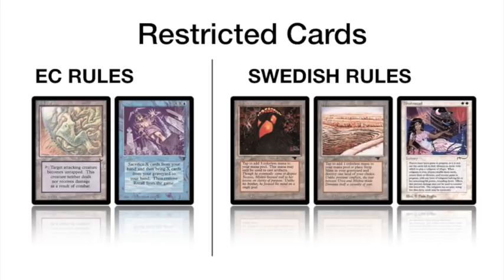So far the answer is no, which to me is evidence that it was okay to unrestrict Recall. You would restrict a card if it's too powerful and unbalancing the meta — making certain decks unplayable or too dominant. We don't really see that with Recall. Maze of Ith is still a bit of a question mark; in EC you're only allowed to play with one, while in Swedish you can play a full playset. When looking at results I don't see Maze of Ith decks dominating, though some do play two copies.